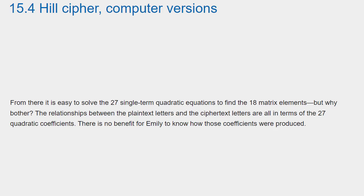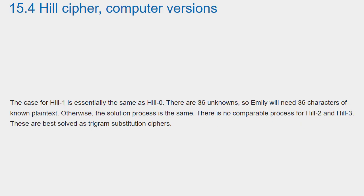But why bother? The relationships between the plaintext letters and the ciphertext letters are all in terms of the 27 quadratic coefficients. There is no benefit for Emily to know how those coefficients were produced. The case for Hill 1 is essentially the same as Hill 0 — there are 36 unknowns, so Emily will need 36 characters of known plaintext; otherwise the solution process is the same. There is no comparable process for Hill 2 and Hill 3; these are best solved as trigram substitution ciphers.